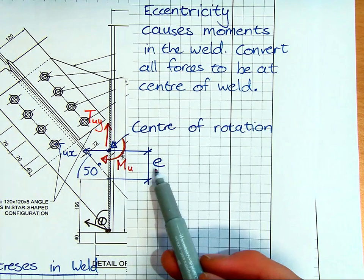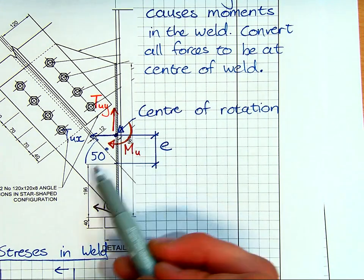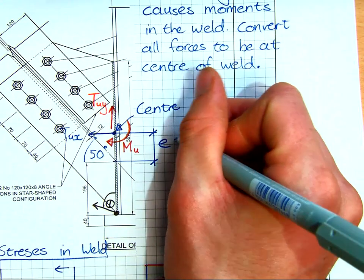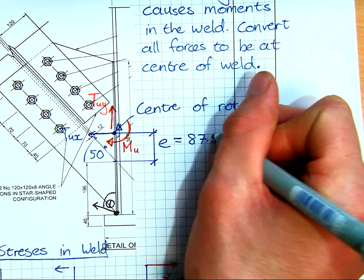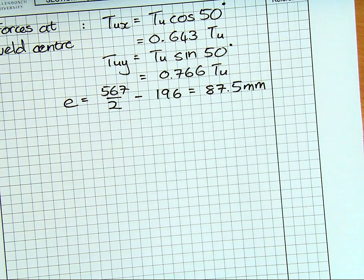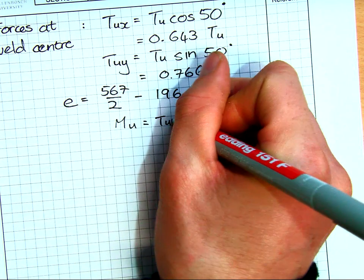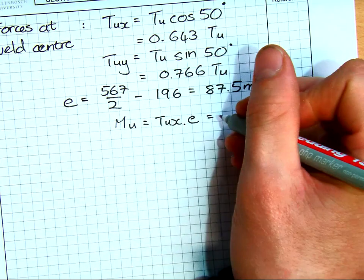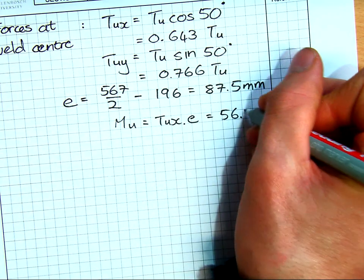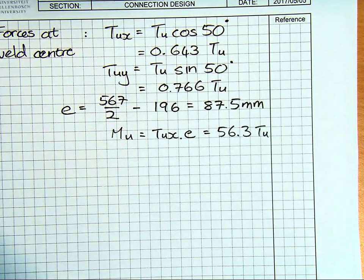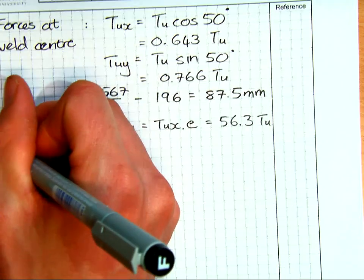And then our moment, we're also going to have the moment capacity. And that moment acts at some eccentricity E, where E, our eccentricity, is 567 over 2 minus the distance between the middle of the bolt and the center. So we've just calculated this distance E here. So it's half the height of the weld minus this 196 millimeters in the corner. So that E equals 87.5. And we're going to use that in our design because once we've got our eccentricity, we can calculate our moment. So our moment is simply Tu_x times E and then you can plug all that in and you'll find that's 56.3 Tu.